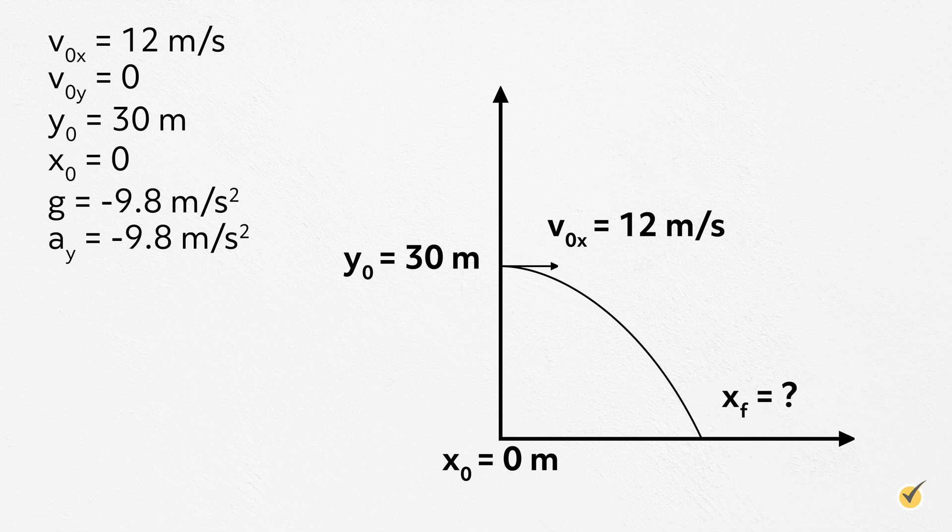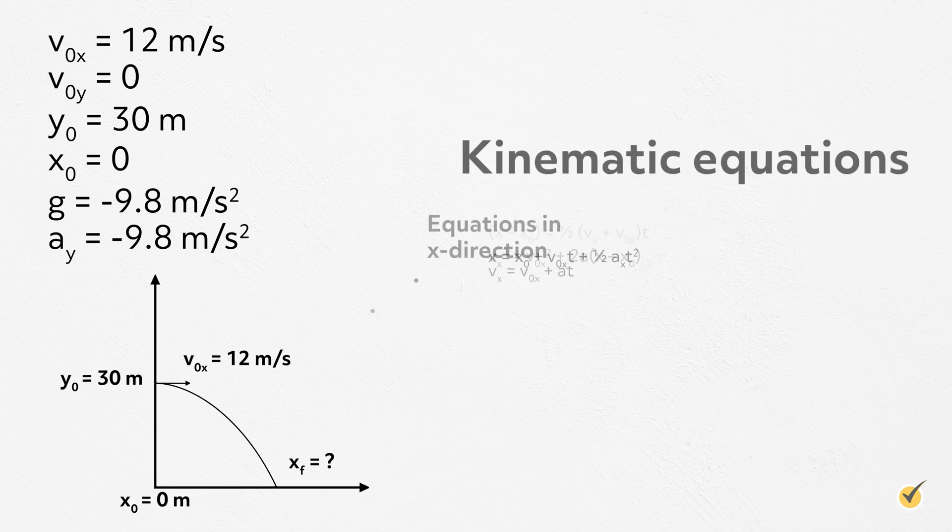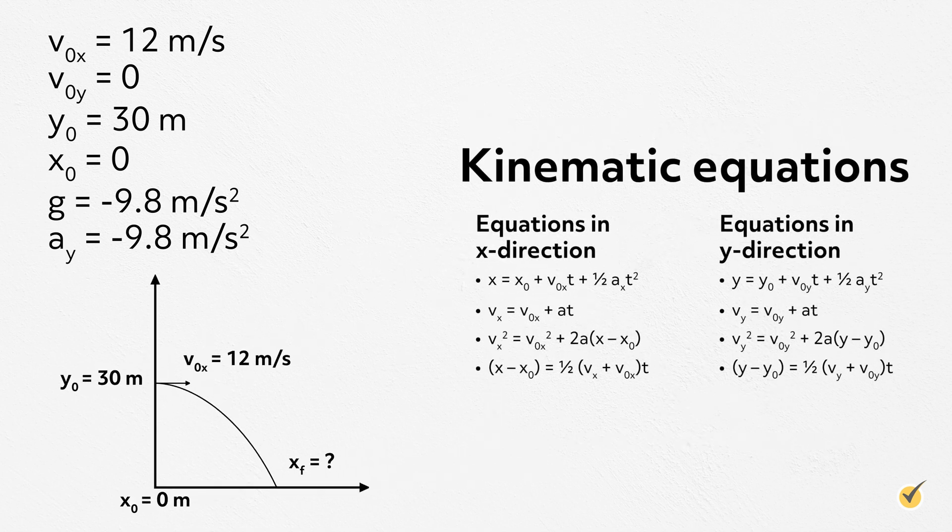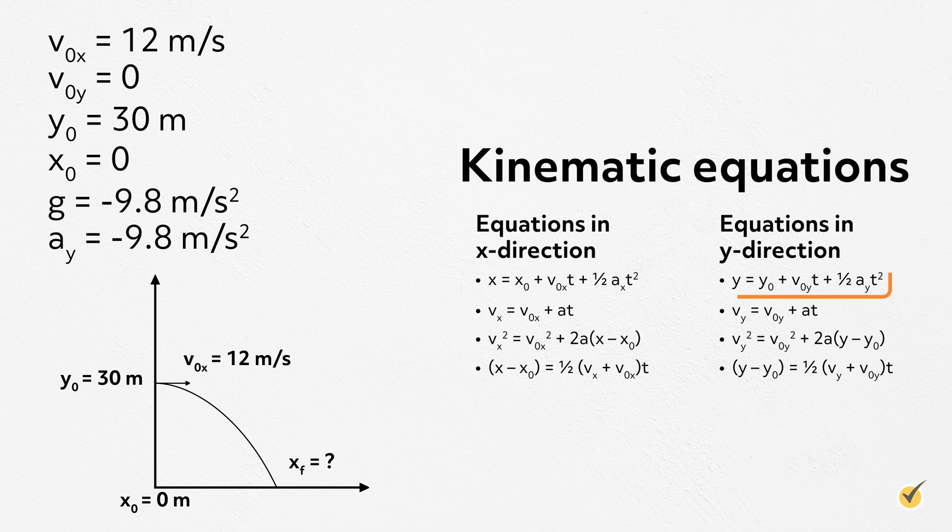Now, what do we need to find? We are asked for the time, t. If we look back at our kinematic equations, we can figure out which equation to use to get the time it takes for the ball to hit the ground. It looks like we have everything but t for y equals y0 plus v0y times t plus 1 half ayt squared.